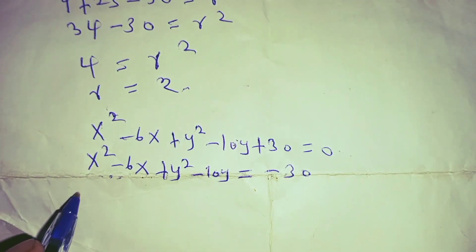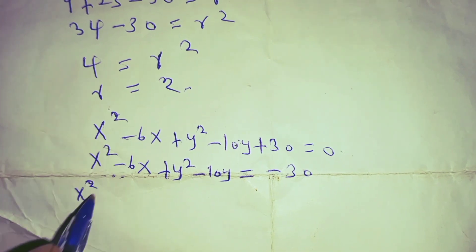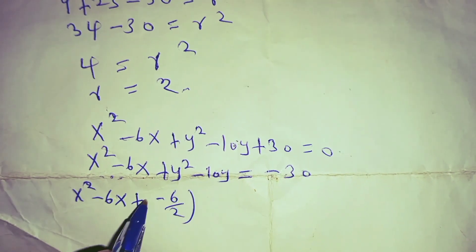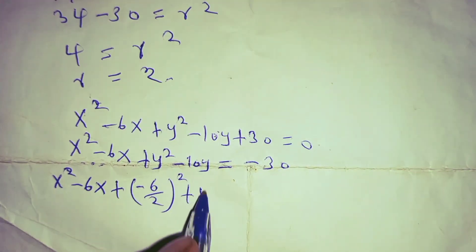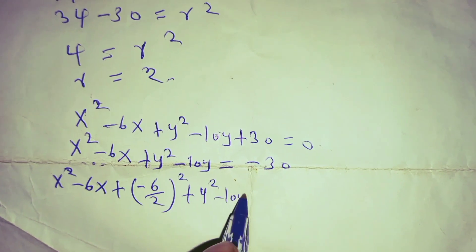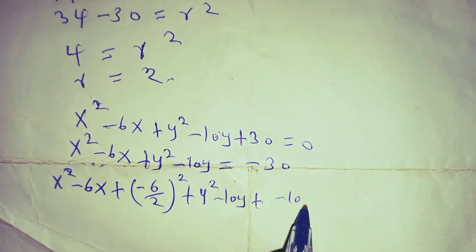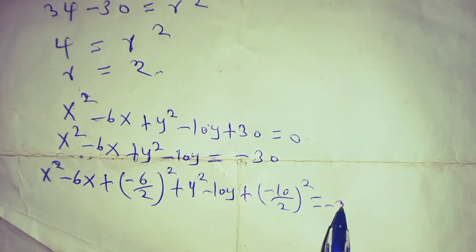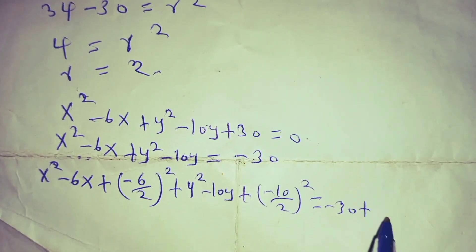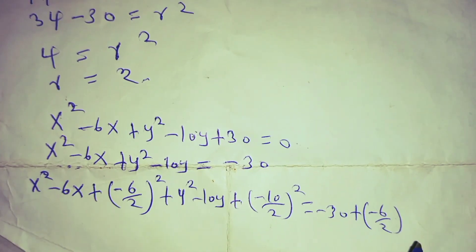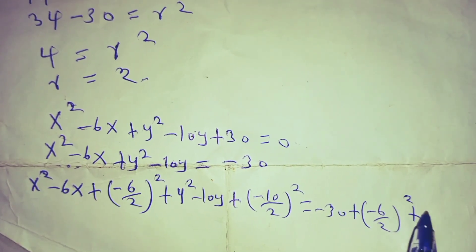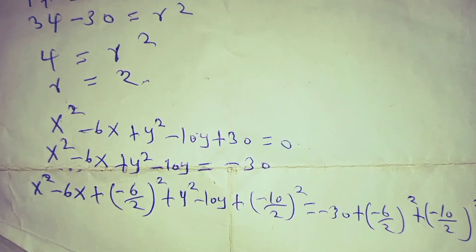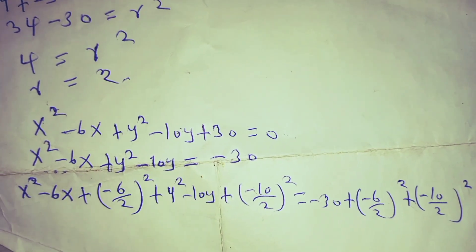Completing the square: take x squared minus 6x plus (negative 6 over 2) squared, plus y squared minus 10y plus (negative 10 over 2) squared. This equals the negative constant plus (negative 6 over 2) squared plus (negative 10 over 2) squared. Remember, whatever you add to the left side you must also add to the right side.